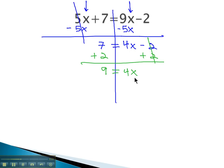Finally, we can get the x alone by dividing both sides by 4 to undo the multiplication.